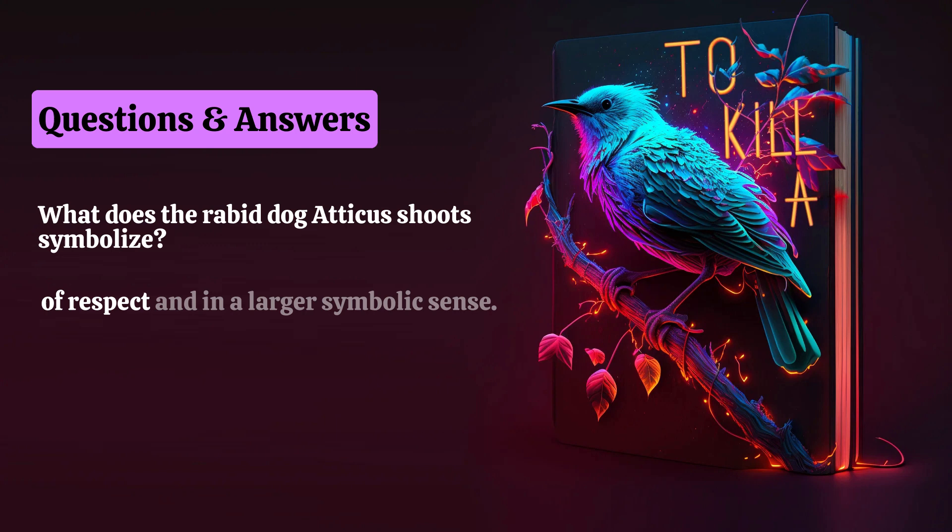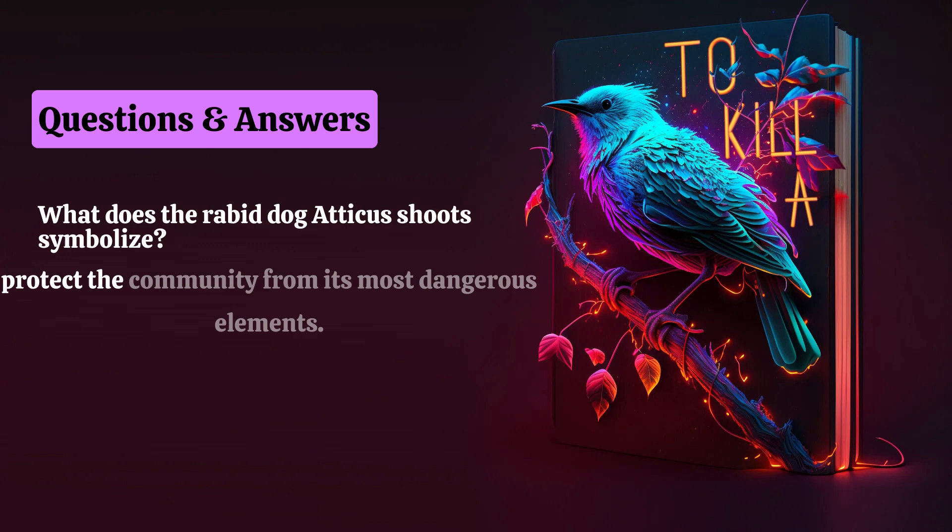In a larger symbolic sense, the dog, because it has rabies, is a dangerous threat to the community. In shooting the dog, Atticus is trying to protect the community from its most dangerous elements.